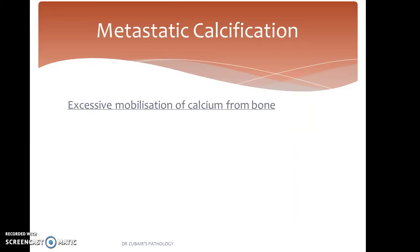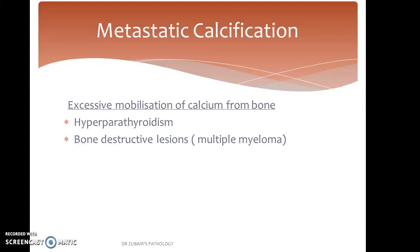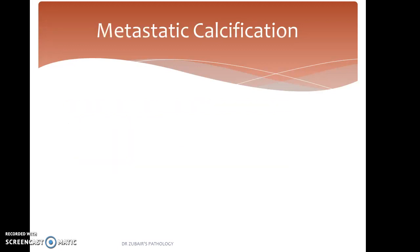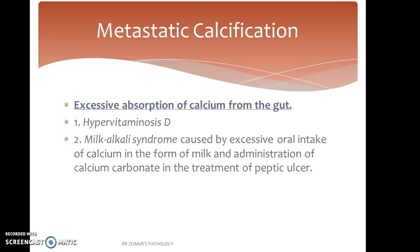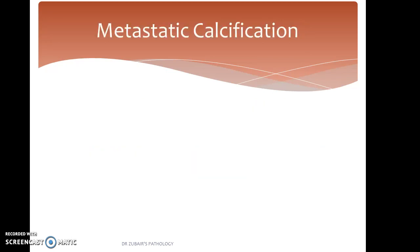Metastatic calcification occurs because of excessive mobilization of calcium from bone, seen in conditions such as hyperparathyroidism and destructive bony lesions such as multiple myeloma. Prolonged immobilization of a patient, such as a bedridden patient, causes bone resorption. Excessive absorption of calcium from the gut, such as in hypervitaminosis D, milk-alkali syndrome caused by excessive oral intake of calcium in the form of milk, and administration of calcium carbonate in the treatment of peptic ulcer, can also cause hypercalcemia of infancy.